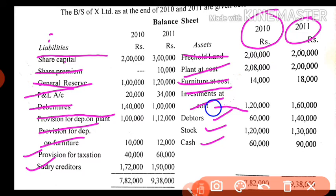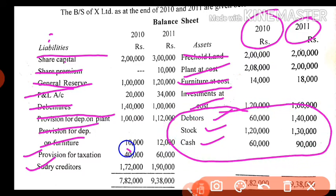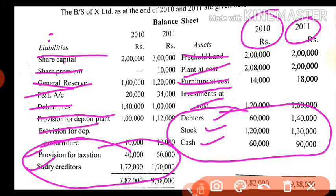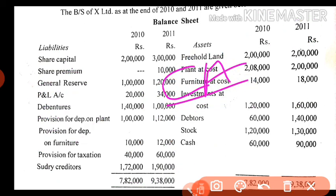Sundry creditors is also a current item. So when we prepare the schedule of changes in working capital, we take only three current assets and two current liabilities. Under the heading 'current assets', we write debtors: in the 2010 column it is 60,000 and in the 2011 column it is 1 lakh 40,000 — there is an increase of 80,000 shown in the increase column. Stock: 1 lakh 10,000 to 1 lakh 20,000 — increase of 10,000.